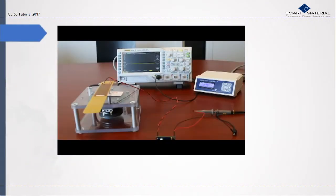Here we have a complete setup of the energy harvesting kit using the CL-50. To the left is the shaker mounted by the MFC and cantilever. In the middle the oscilloscope and to the right the amplifier.